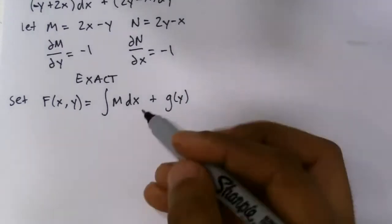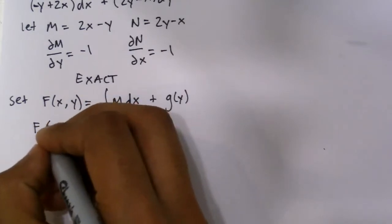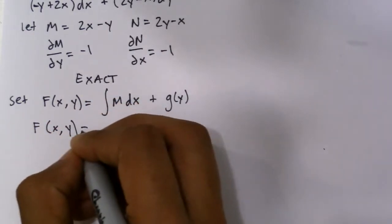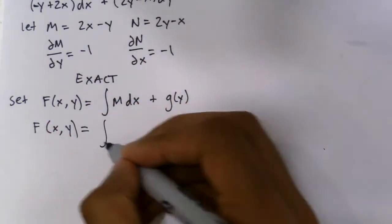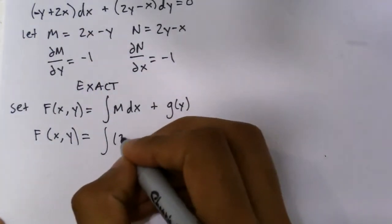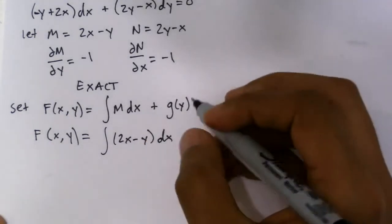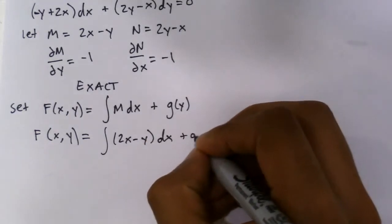So F(x, y) is equal to the integral of M, and we said M equals this up here. So that's just 2x minus y with respect to dx, and plus g(y).